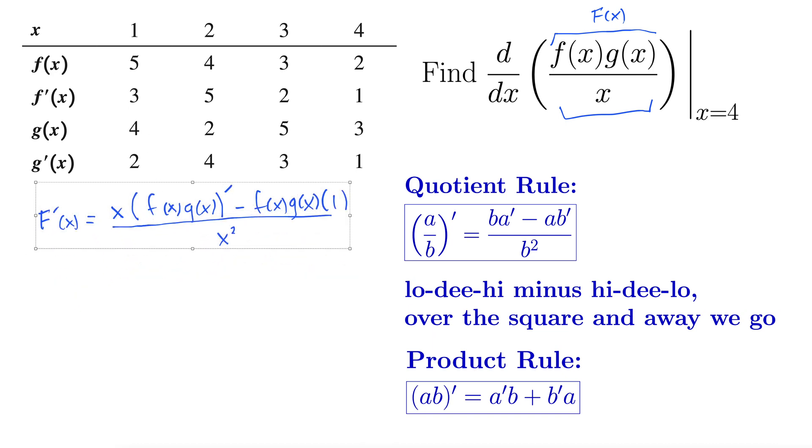So now we hit it with the product rule, so this becomes x times the quantity f prime of x g of x plus g prime of x f of x, there's the product rule, minus f of x times g of x times 1, and this x multiplying all of that expansion there for the product rule all over x squared, and we want to evaluate it at x equals 4.